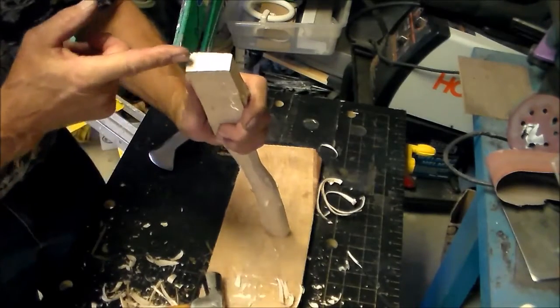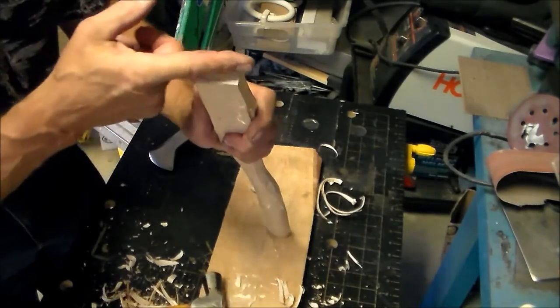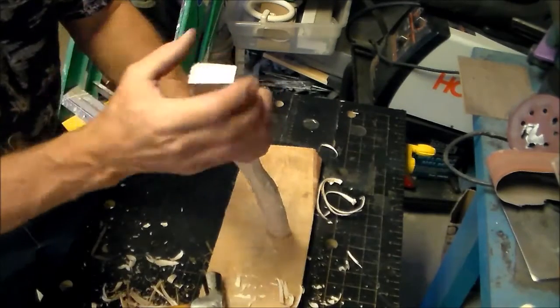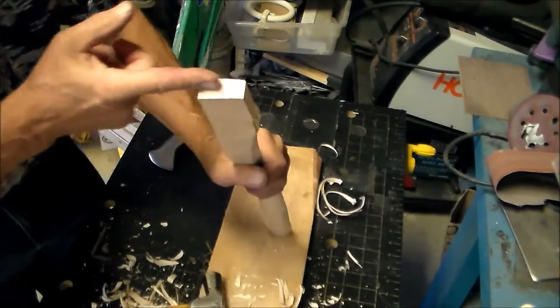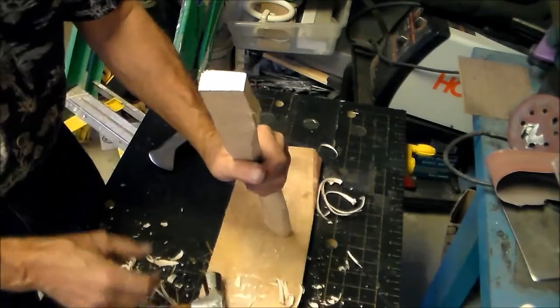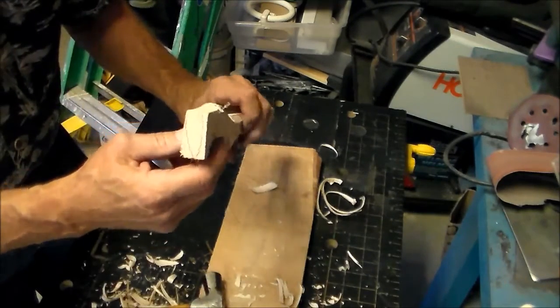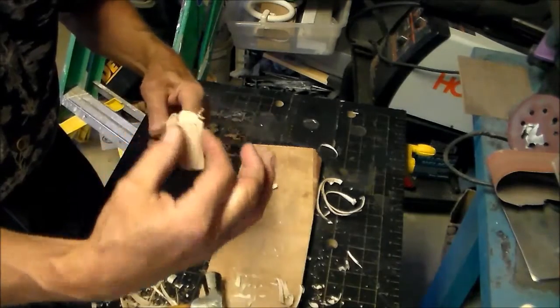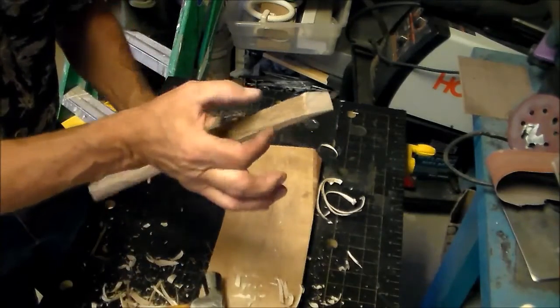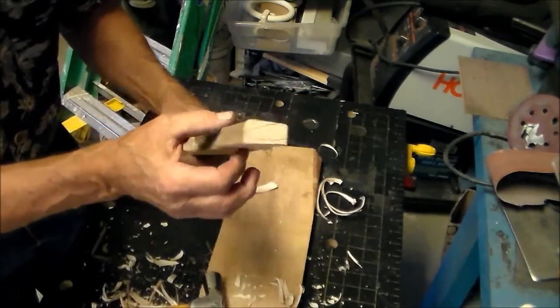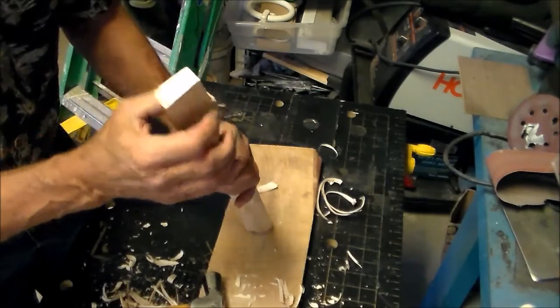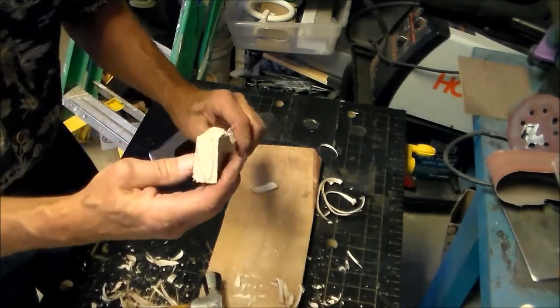Now if you look here I'm cutting this so that the grain is running the length of the longer length of the piece that's going to be extended into the handle. Now I'm going to work this down but I'm going to try to keep this shoulder right in here a little bit thicker than what will fit inside the slot of the handle.